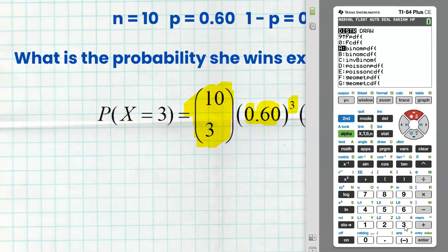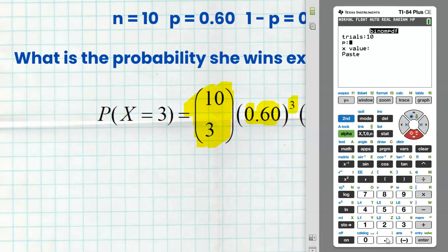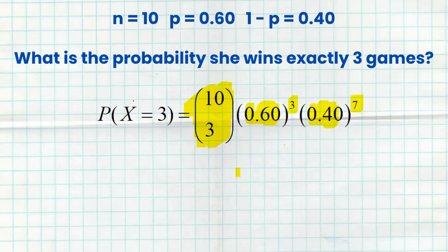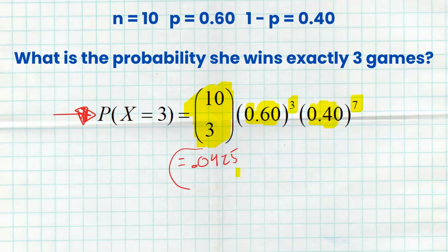BinomPDF will calculate the exact number of successes that you're looking for. It's going to ask me a couple simple questions: 10 trials, probability of success 0.6, and we're looking for exactly three. If you're doing a binomPDF, whatever number you type into the x value, that's exactly how many successes it's going to calculate the probability of. We get 0.0425 as our probability. That should actually make sense because she should win six games — that's the expected value — so to only win three should be a little bit less likely. For multiple choice, you don't have to show any work, just use the calculator. But if this is an FRQ, you do have to show this work, though you can use the calculator to get your answer.